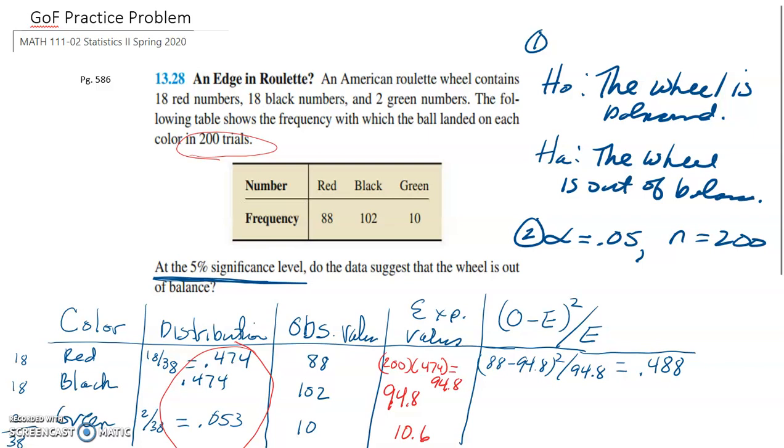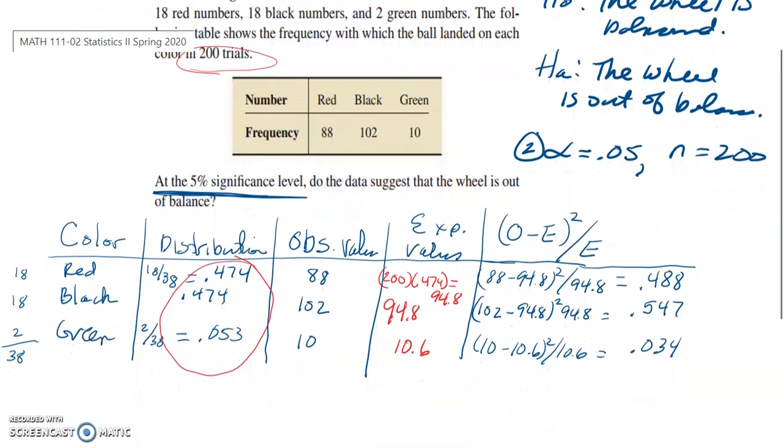Do that for the next problem. So now our observed is 102 minus, again, the 94.8 because the expectation was the same for black. Divide it by 94.8. And this time you should get 0.547. And for green, you have 10 minus 10.6 squared divided by 10.6. It's going to give you 0.034.